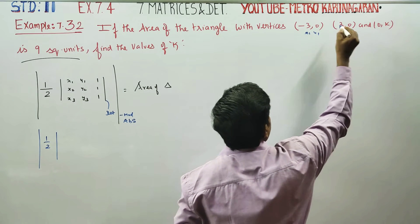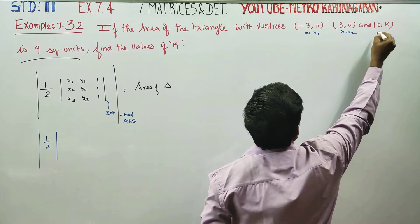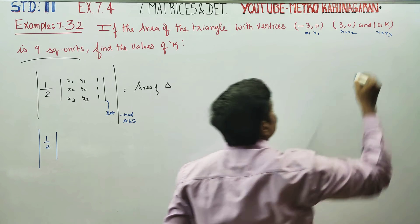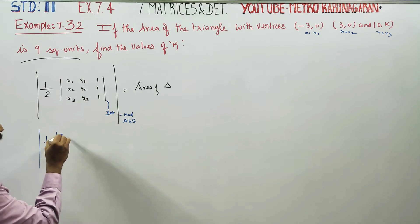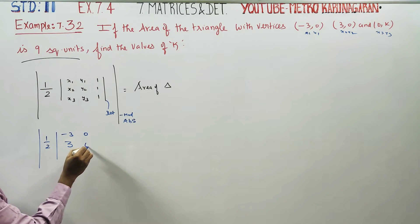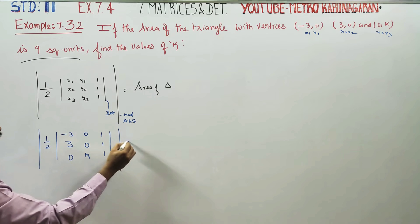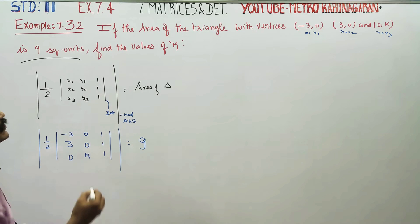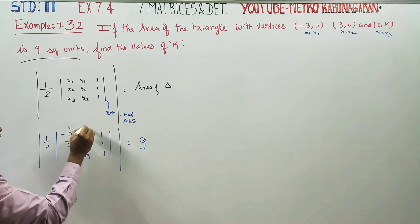It is the determinant x1, y1, x2, y2, x3, y3. The vertices of the triangle are minus 3, 0, 0, 0, and 0, 0. This equals the area of the triangle which is 9 square units. Now we shall break this plus minus.